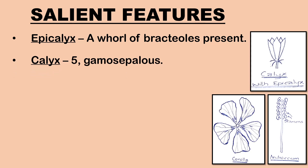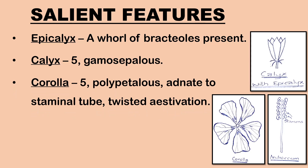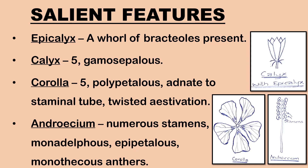Calyx: 5, gamosepalous, green. Corolla: 5, polypetalous, slightly united at the base and adnate to the staminal tube with twisted aestivation. Androecium: stamens numerous, united into a bundle, monadelphous, epipetalous, adnate to the petals at the base, anthers free, anthers monothecous and reniform, pollen grains spiny.